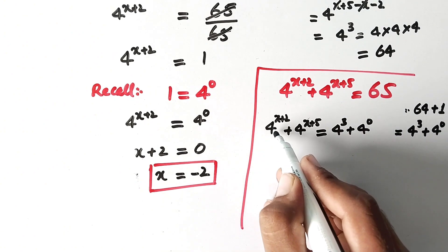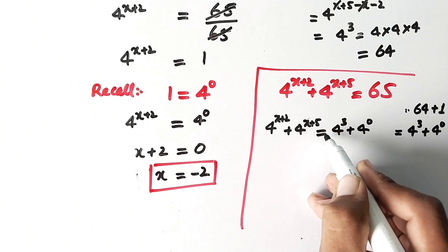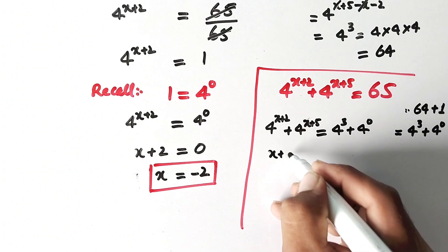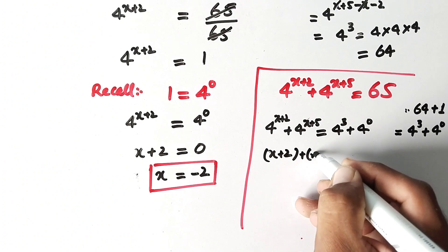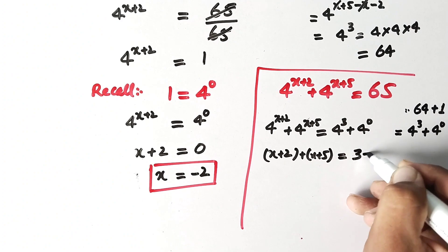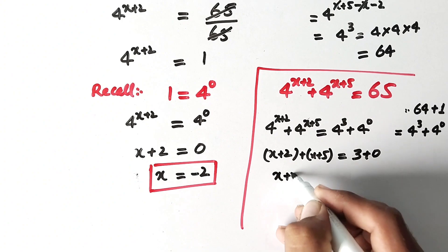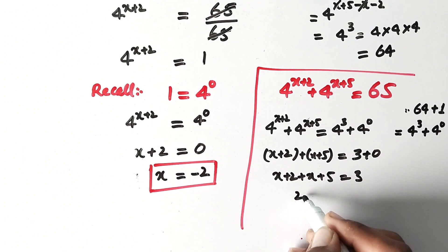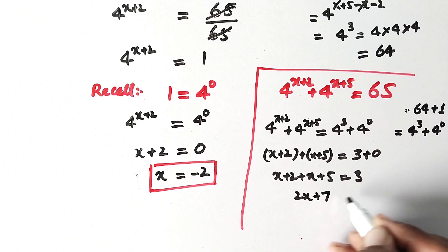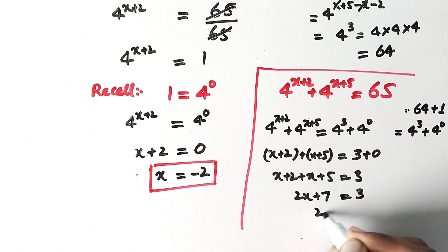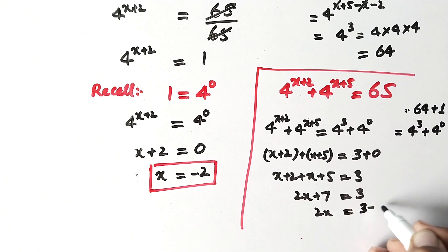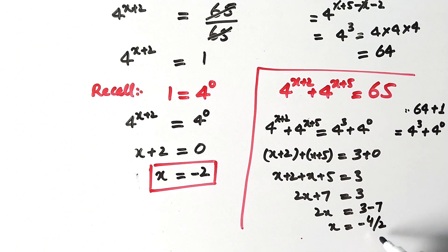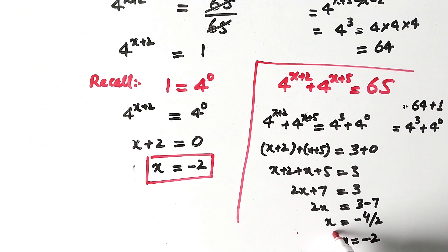Since the bases are the same on both sides, we can compare the exponents: x plus 2 equals 3 and x plus 5 equals 0 — or matching term by term. Solving: 2x plus 7 equals 3, so 2x equals 3 minus 7 equals negative 4, and x equals negative 4 over 2, which gives x equals negative 2. That is the same value of x.